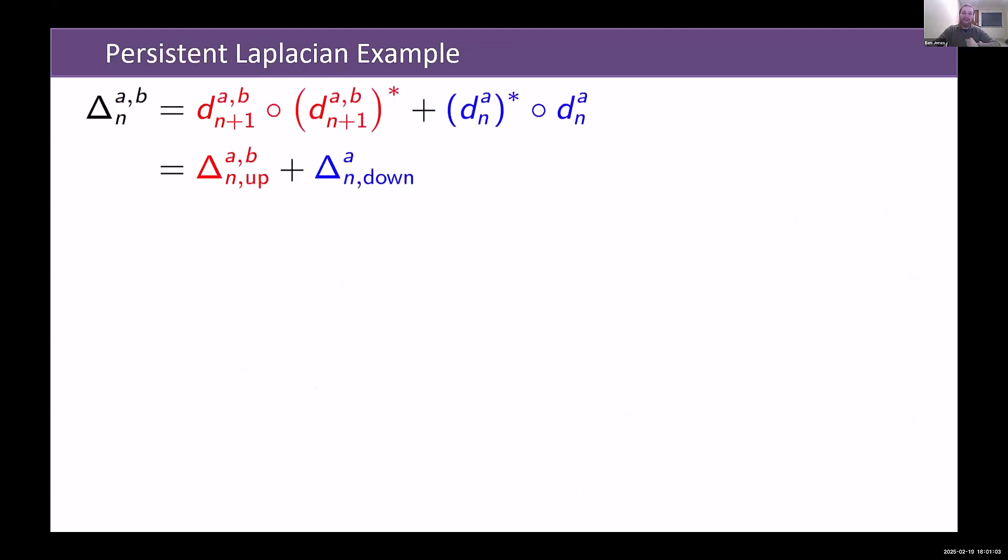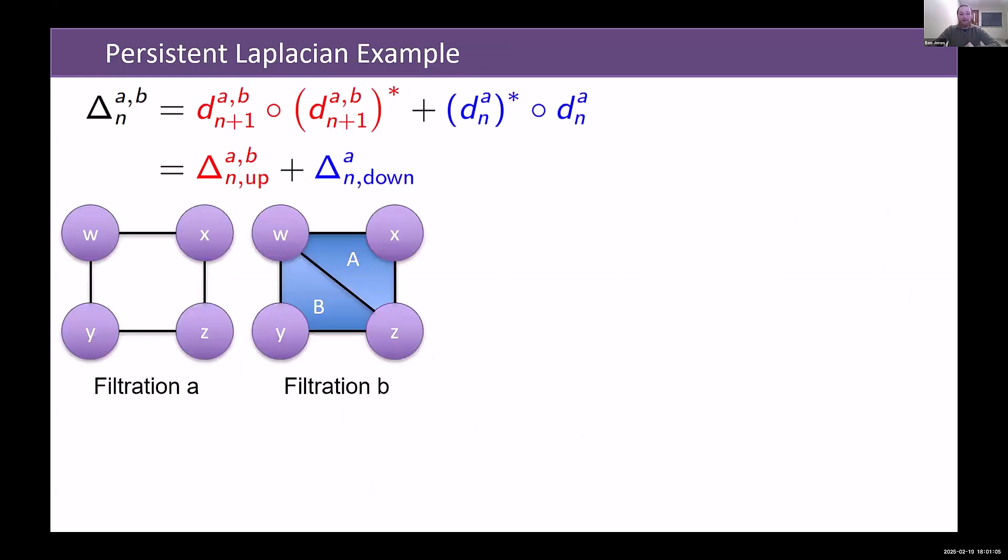Next, we can upgrade it to a persistent case. So we're going to take two simplicial complexes. Filtration level B is the one that we just saw, and filtration level A is missing a few simplices. In particular, it has homology at filtration level A, but not at filtration B, so the persistent homology here is trivial, because that cycle does not persist into filtration level B.